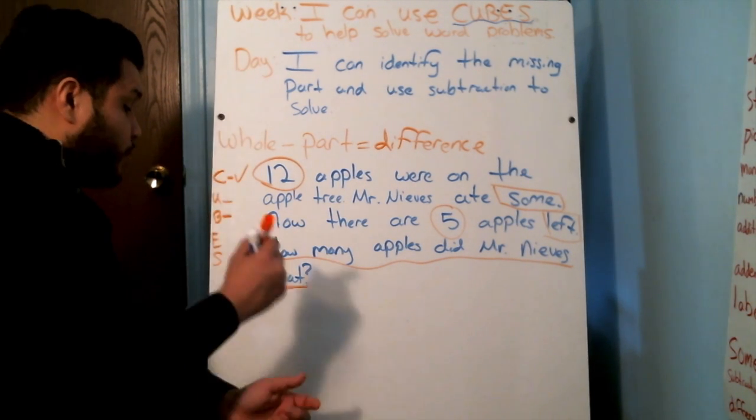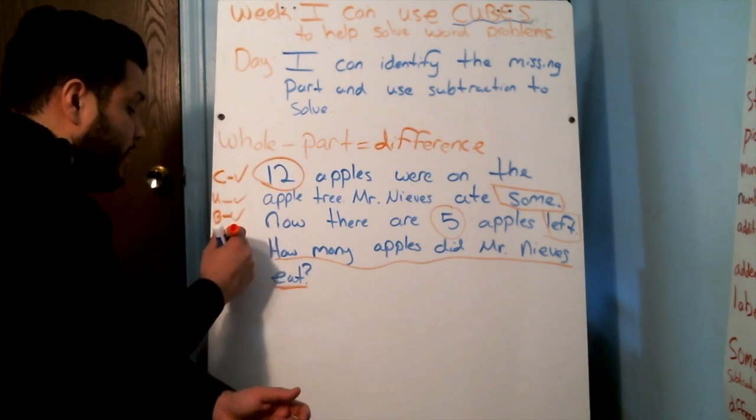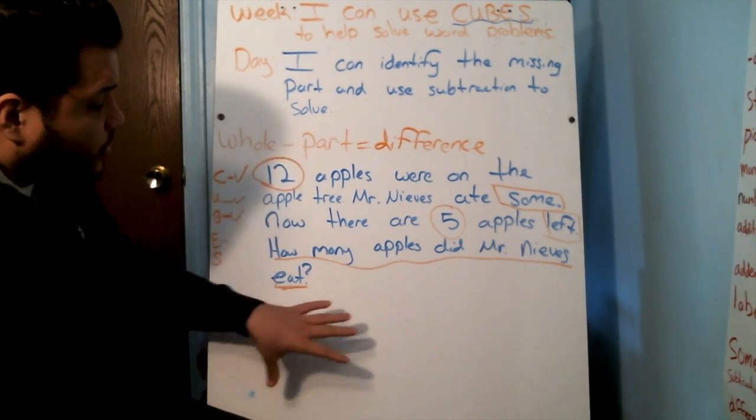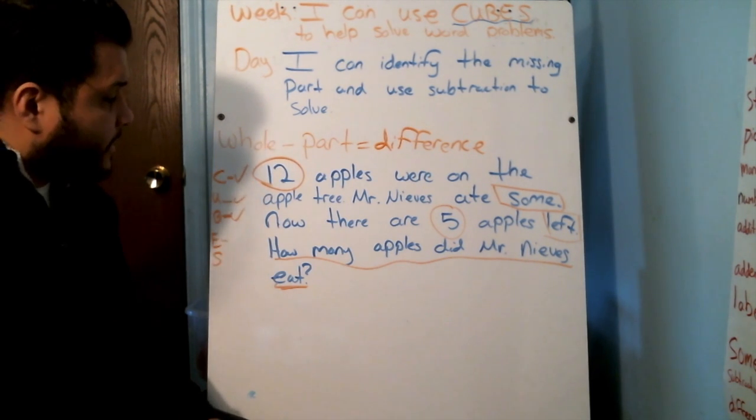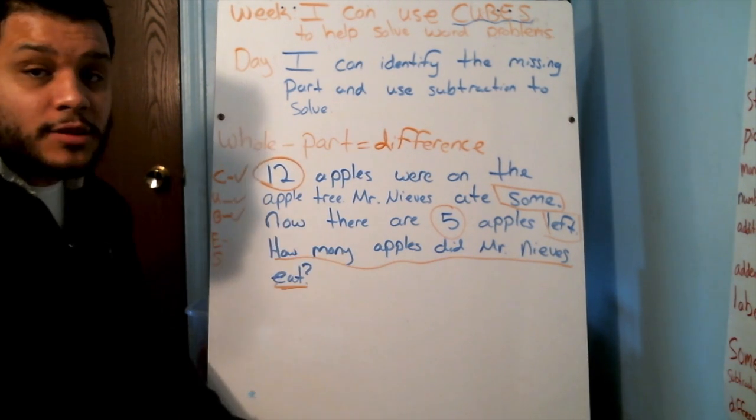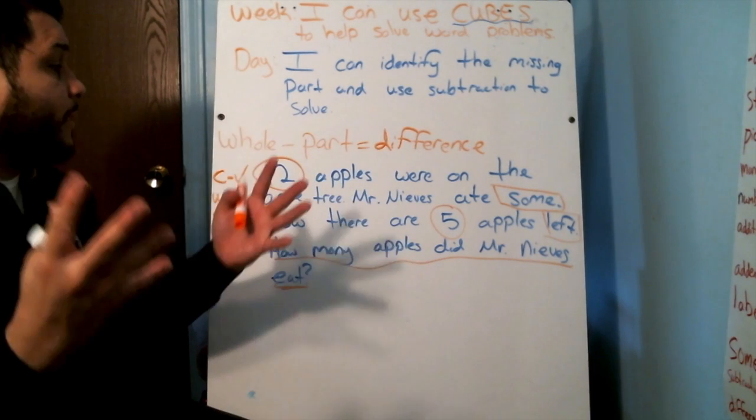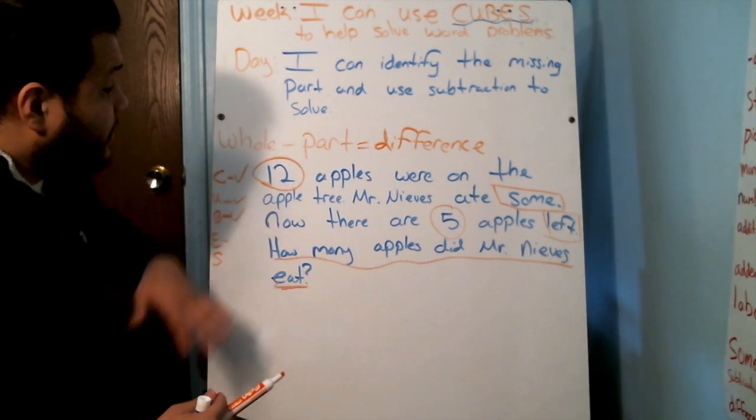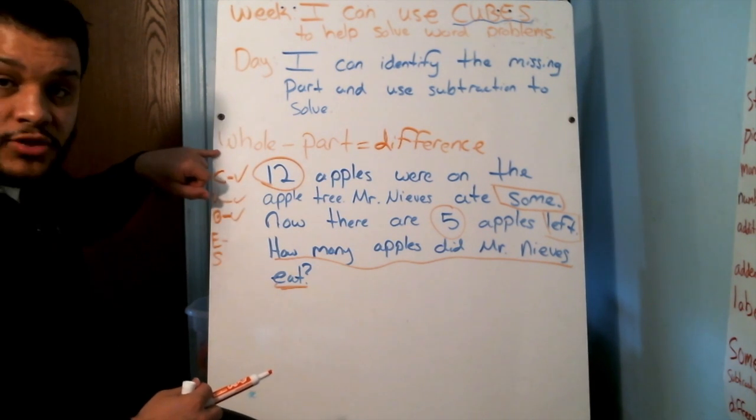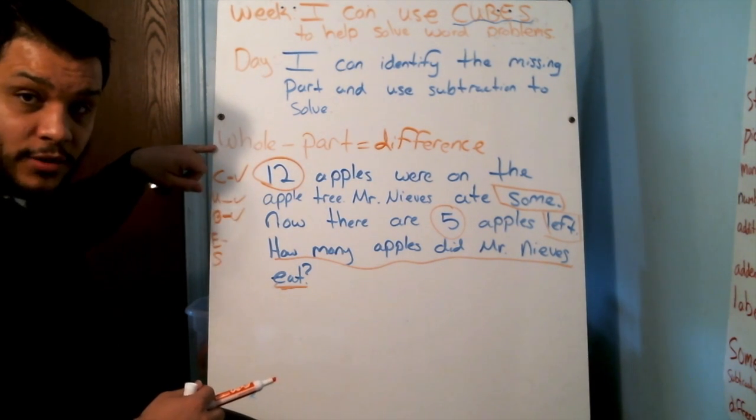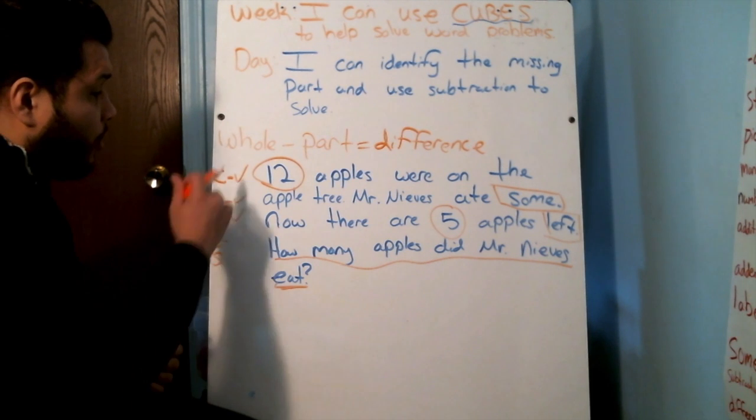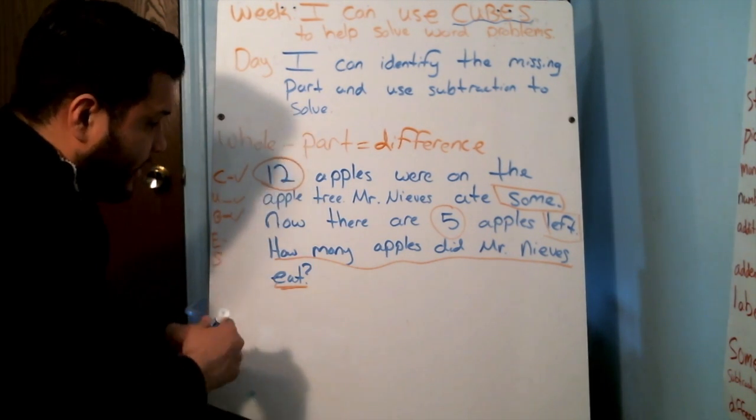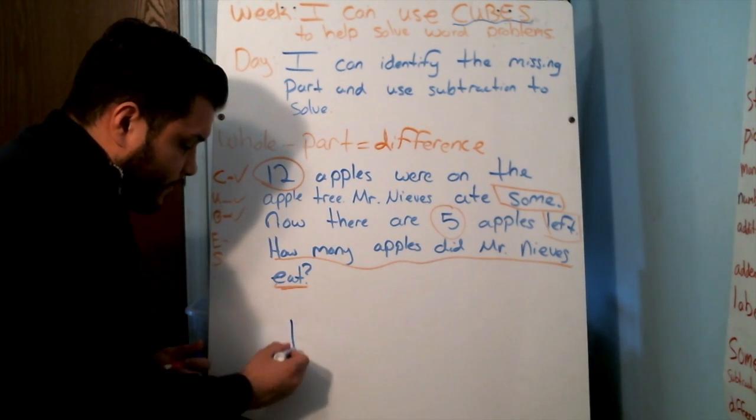We're going to start to evaluate our word problem. And when we evaluate, we start thinking about our strategy and we start to put together our number sentences. Well, we know that the total is always the biggest number. That is what we call the whole. My whole is the biggest number. In subtraction, my formula tells me that we start off with the whole. So I'm going to write the number 12 first. I'm going to write it in blue so that you guys can see it nice and clear. 12.